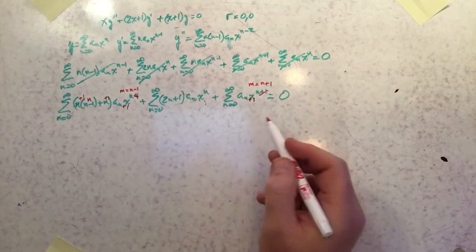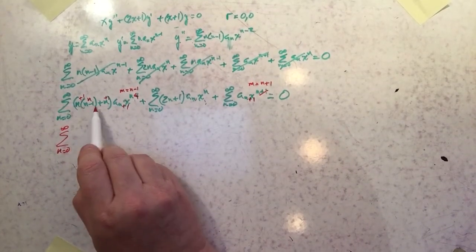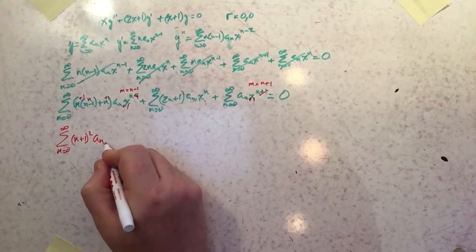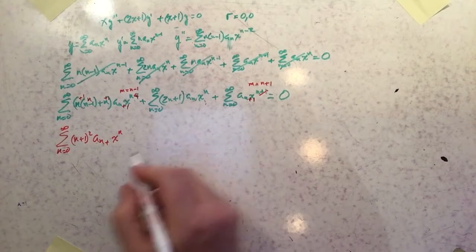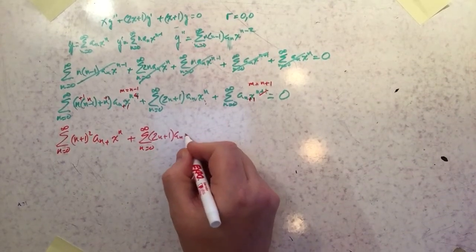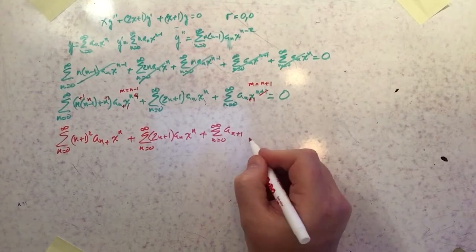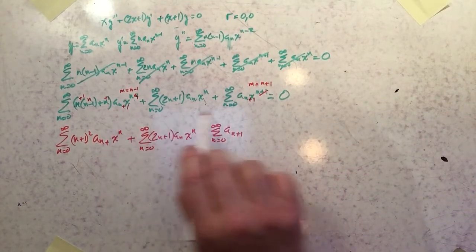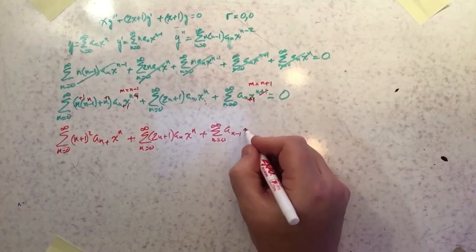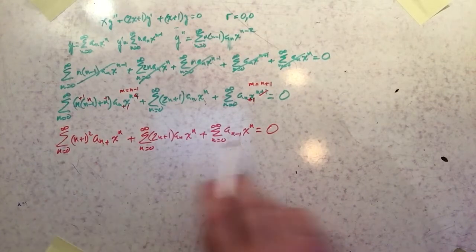Rewriting everything with the new indexes, all three series are now in x^n. The first term becomes Σ (n+1)²·aₙ₊₁·xⁿ — since n(n−1)+n evaluated at n+1 gives (n+1)². The second term remains Σ (2n+1)·aₙ·xⁿ unchanged. The last term becomes Σ aₙ₋₁·xⁿ.